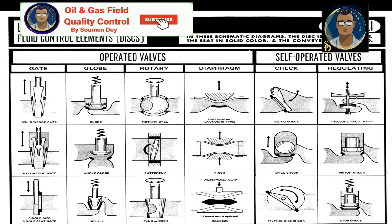Classification by mechanism: based on the valve mechanism, fluid control elements, or how the discs control flow, there are two basic types of valves — manually operated valves and self-operated valves. Manually operated valves include gate valve, globe, rotary, and diaphragm. For gate valves, the mechanism includes solid wedge type, split wedge type, and single disc single seat gate valve.